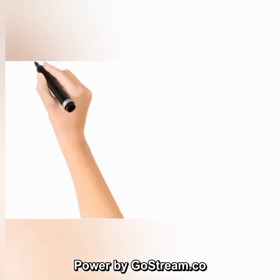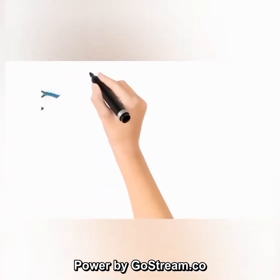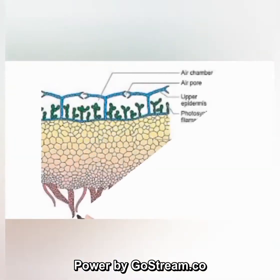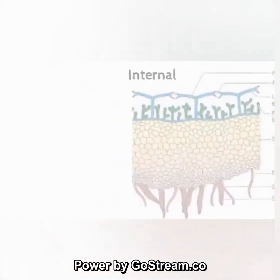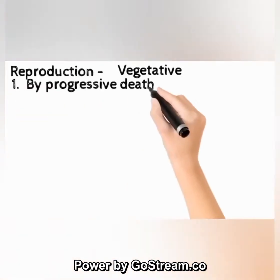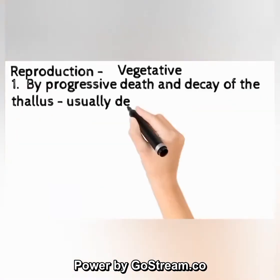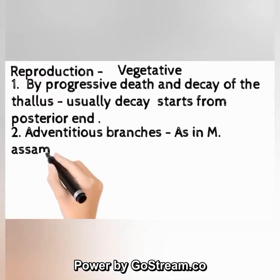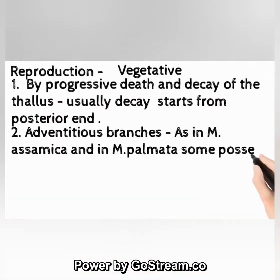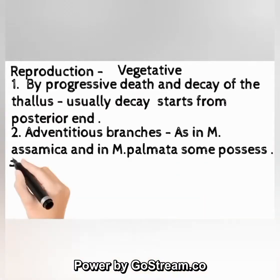External and internal structures of Marchantia are shown here. Reproduction — vegetative: (1) by progressive death and decay of the thallus, usually starting from the posterior end; (2) by adventitious branches as in M. emarginata and M. palmata.